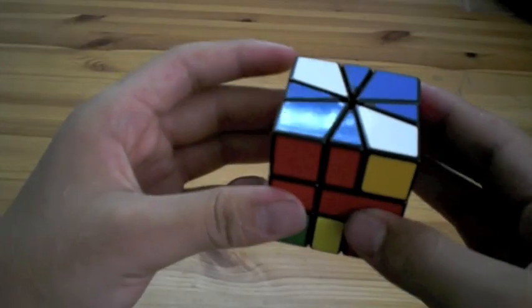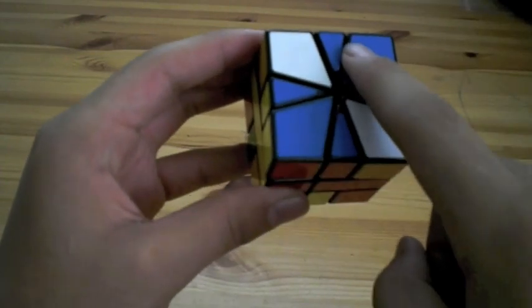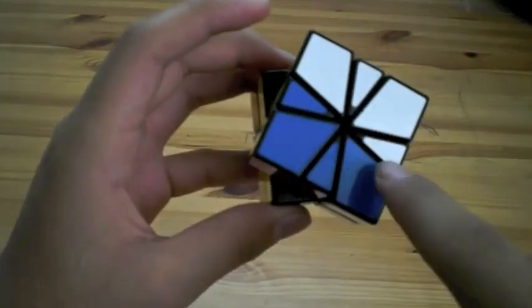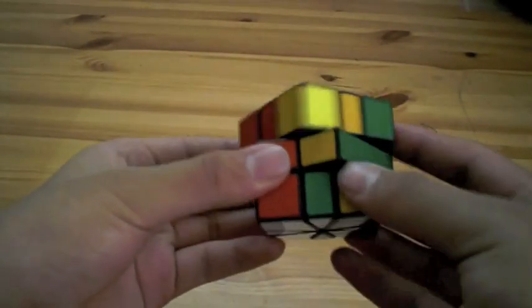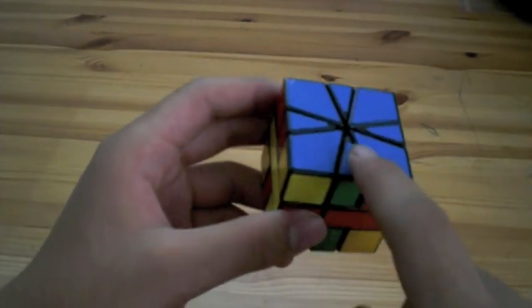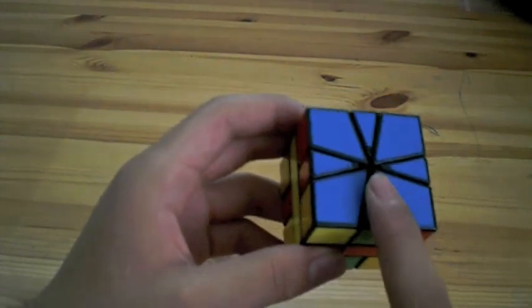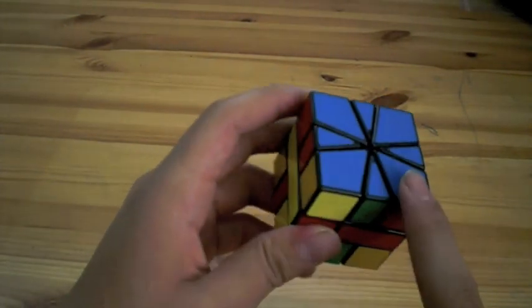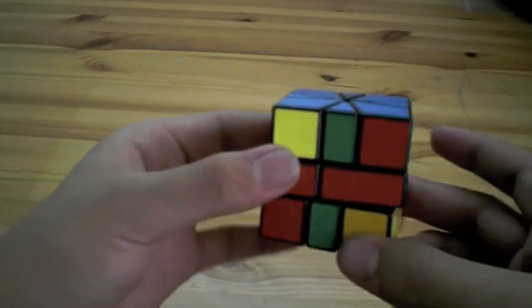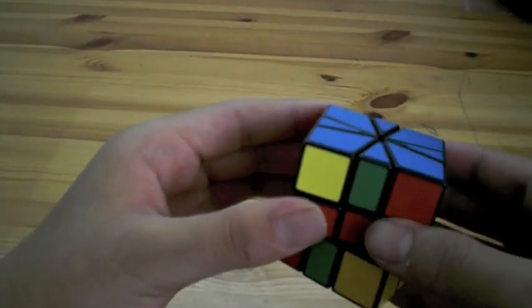I'll show you one more example. I'm going to bring this down to match this, and that also made this come up to match this. Then I'm just going to move this into the correct layer. Now the edges will not necessarily be solved, but a lot of the times you can get most of them solved by just whether you misalign the top or the bottom layer.